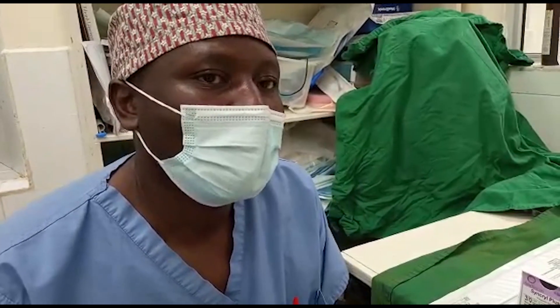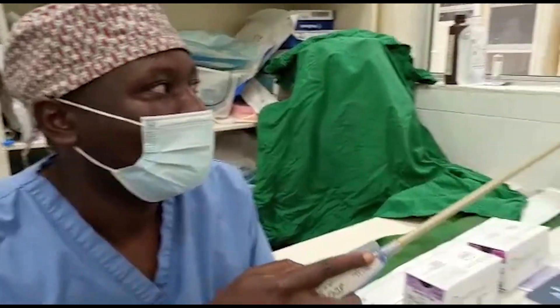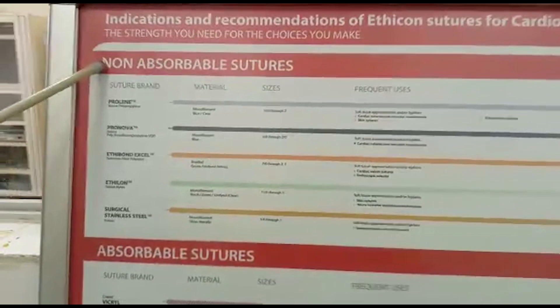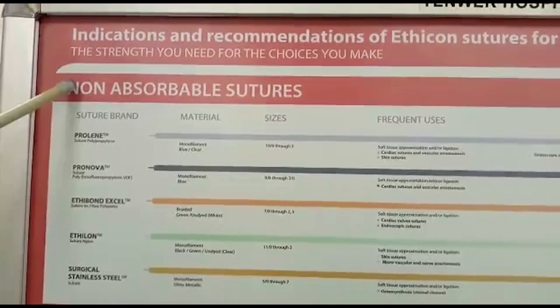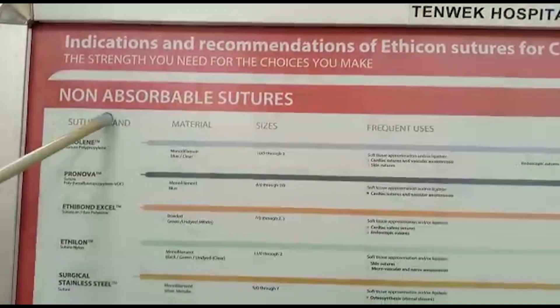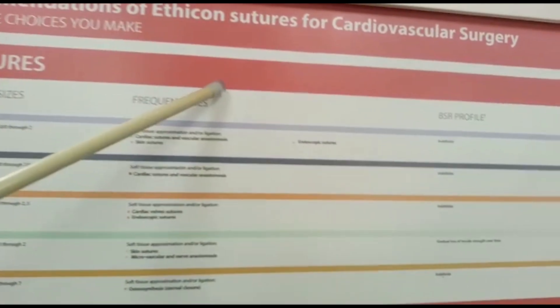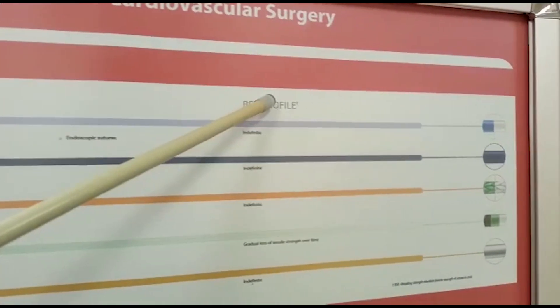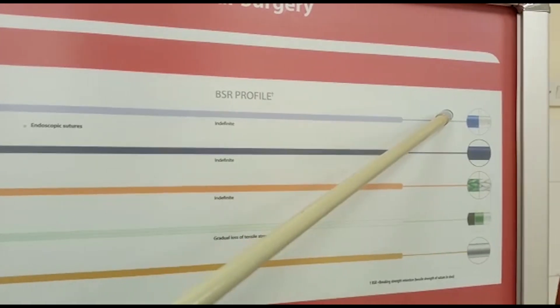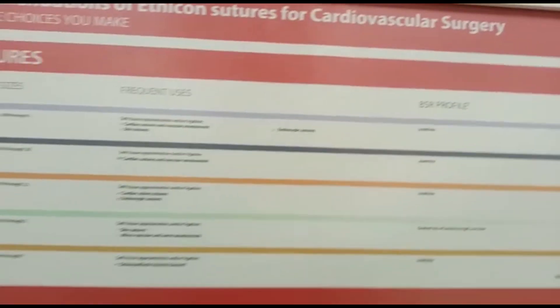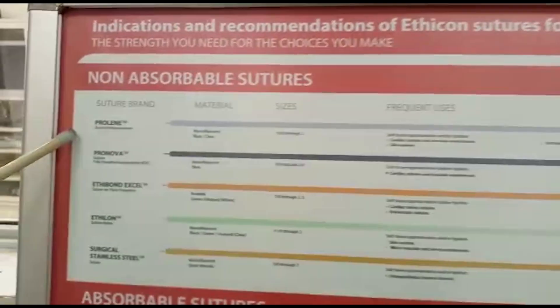Sutures are classified into two types: absorbable sutures and non-absorbable sutures, as illustrated in the chart. To start with non-absorbable sutures, we have Prolene sutures.